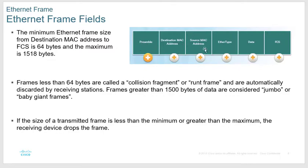Then we have our addressing, type, data, and then a frame check sequence that looks for errors. Think about the frame check sequence like this: let's say all the ones in this packet total 215, so the frame check sequence would say 215. When the packet arrives, if it doesn't have that many ones, it knows something happened to the packet, because at the end everything gets boiled down to ones and zeros.